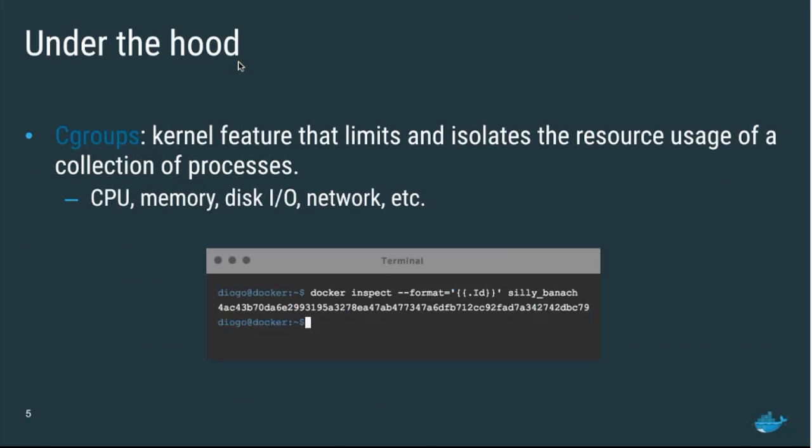We also make use of cgroups for security. Cgroups is a kernel feature that limits and isolates the resource usage of a collection of processes. We use it to limit CPU, memory, IO, network, etc. By using cgroups, you can ensure a container does not use up all the resources of your host or virtual machine, and you can have multi-tenant containers living happily alongside each other.